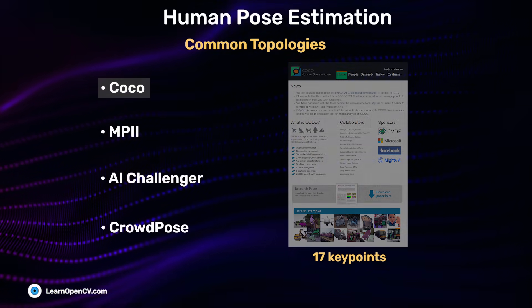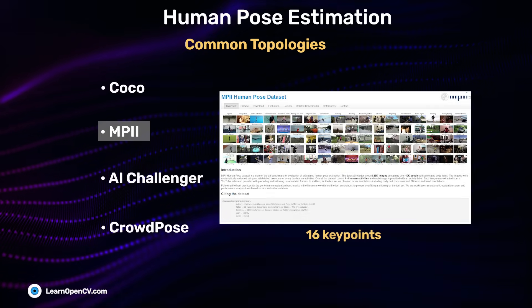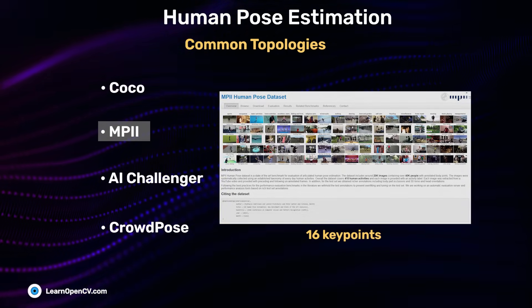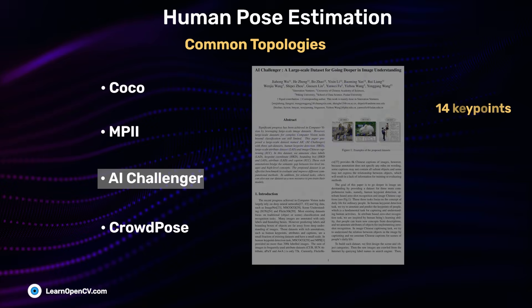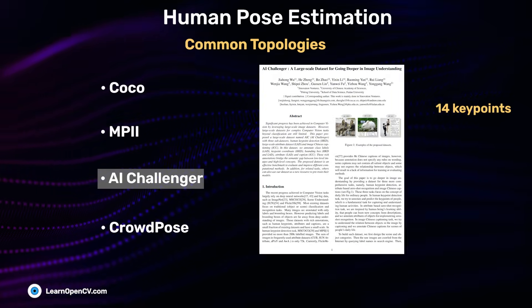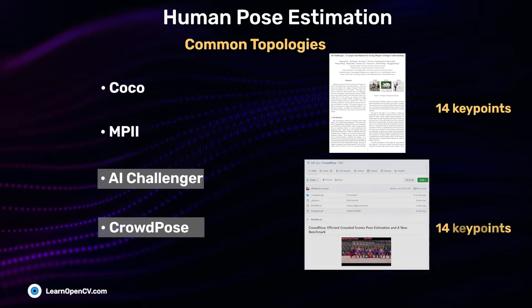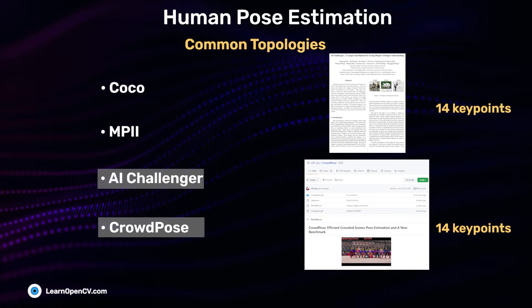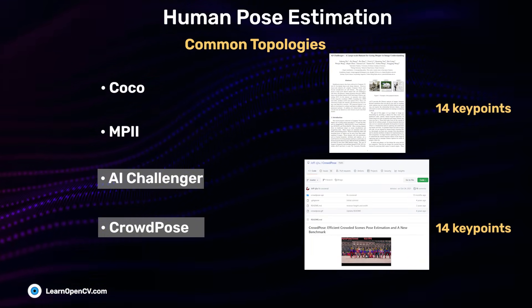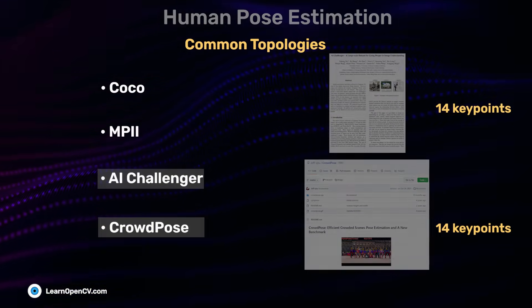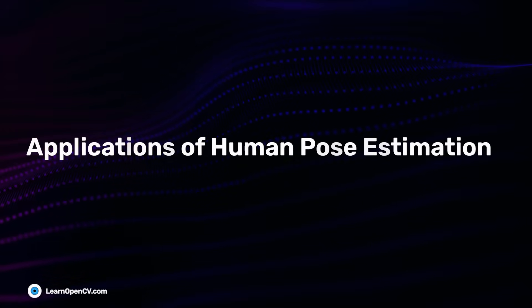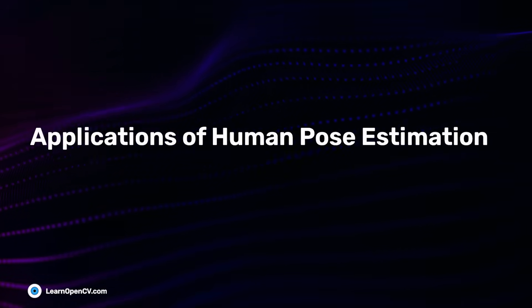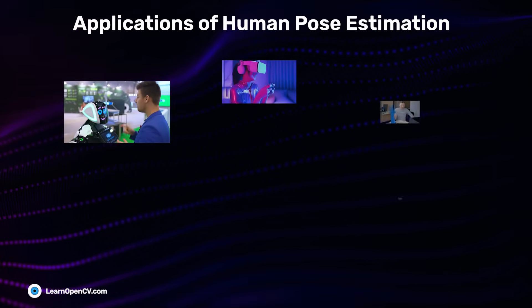Others include the MPII dataset with 16 keypoints, the AI Challenger dataset and Crowdpose dataset both with 14 keypoints, and so on. Human Pose Estimation has possible applications in many industries.